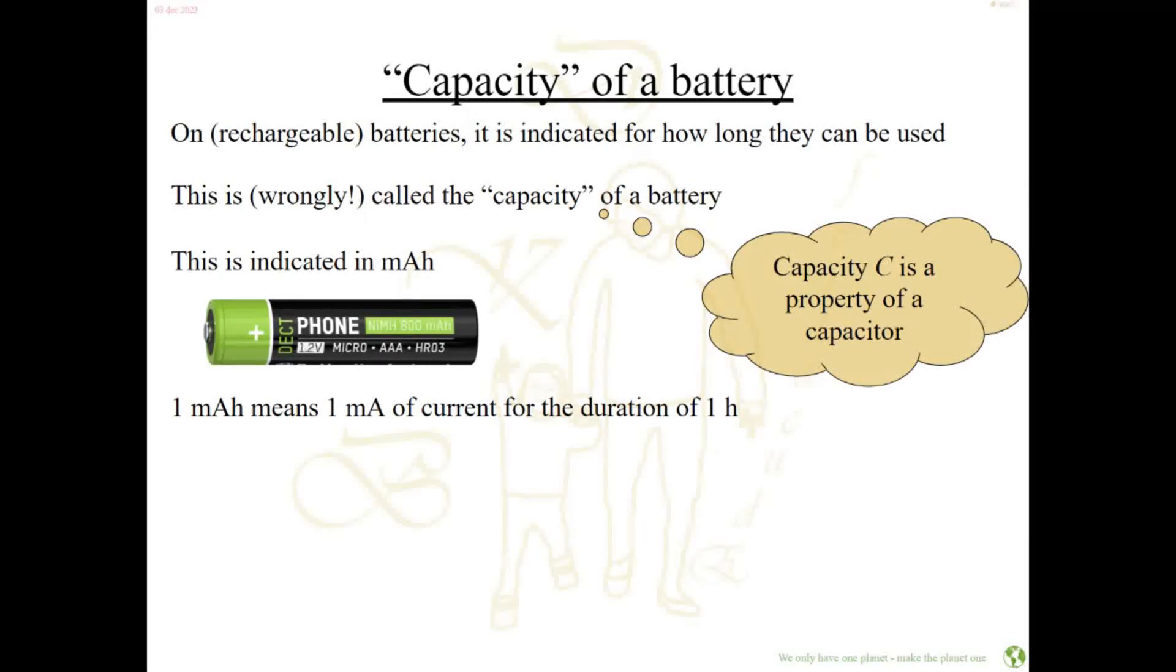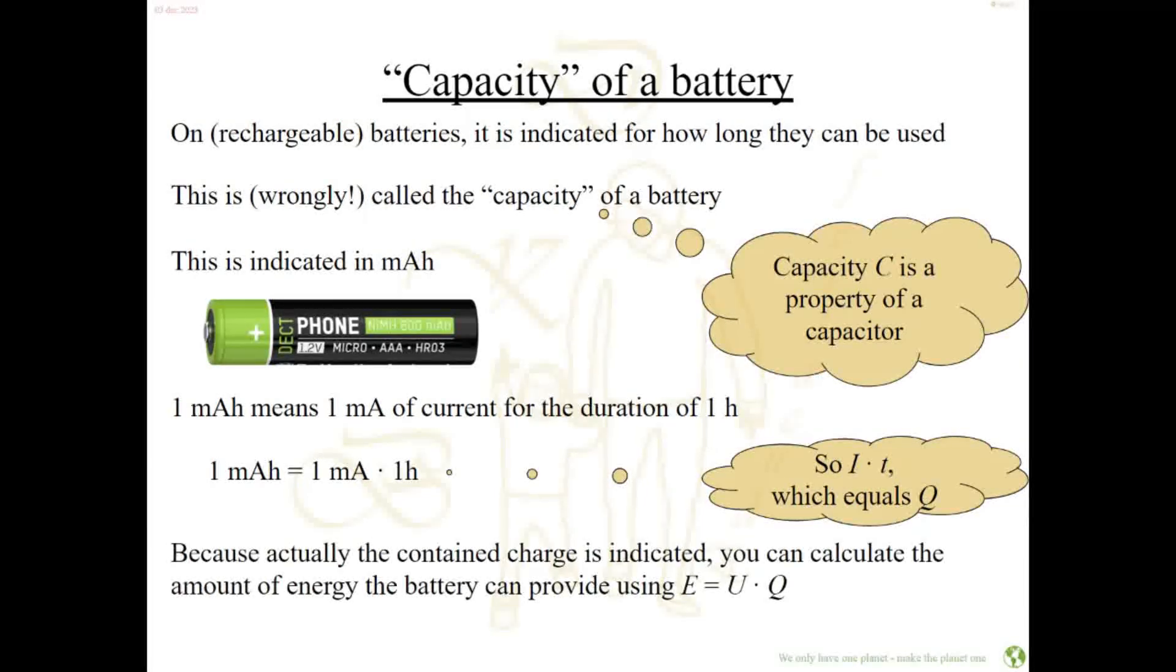Wait a minute—current times time. One milliamp hour actually means one milliamp times one hour. Milliamps are the unit of current, and hours are the unit of time, so it's current times time, which equals charge. So it's not capacity, it's not the amount of energy stored in the battery—it's the amount of charge. We still need one more calculation to find the energy stored in the battery by using the voltage. Energy is voltage divided by charge, so we rewrite that formula: energy equals voltage times charge. Now you know how much energy is in a battery.